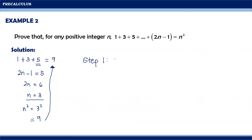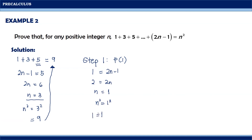For step 1, we need to show that the mathematical statement is true for P sub 1. P sub 1 means we will be considering the first term. So 1 being equal to 2n minus 1, then 2 is equal to 2n, then n is equal to 1, then the sum is equal to n squared which is equal to 1 squared. Therefore the sum is equal to 1. Hence 1 is equal to 1. Therefore the statement holds true for P of 1. With this, we can continue to our step 2.